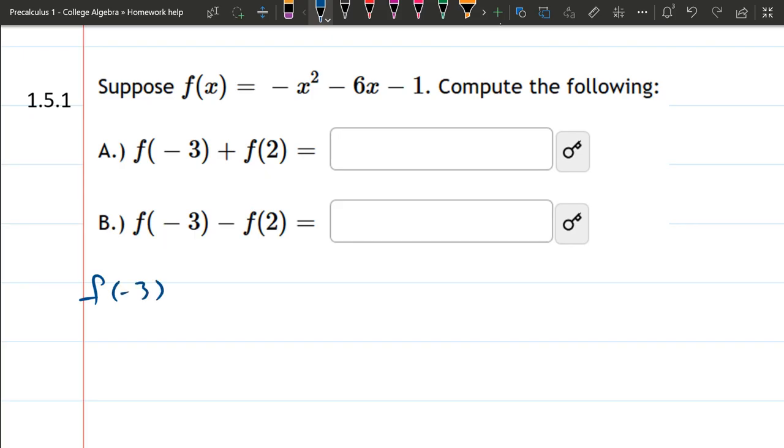So we'll start with f of negative three. So wherever you see an x up here, you're going to replace it with negative three.